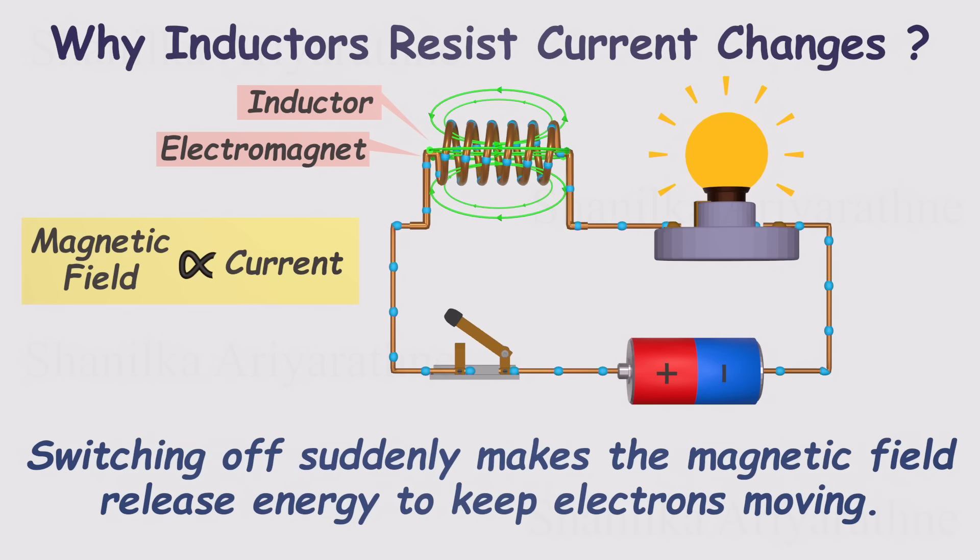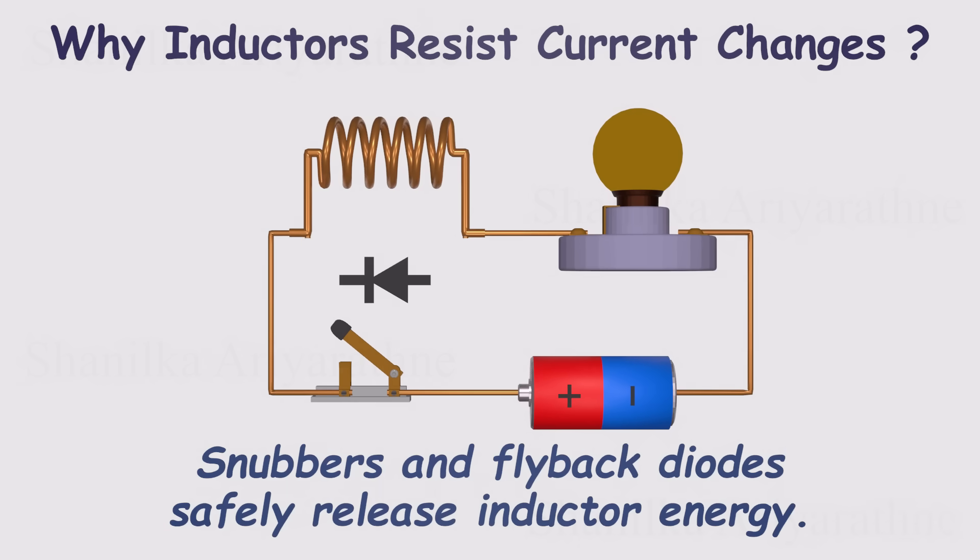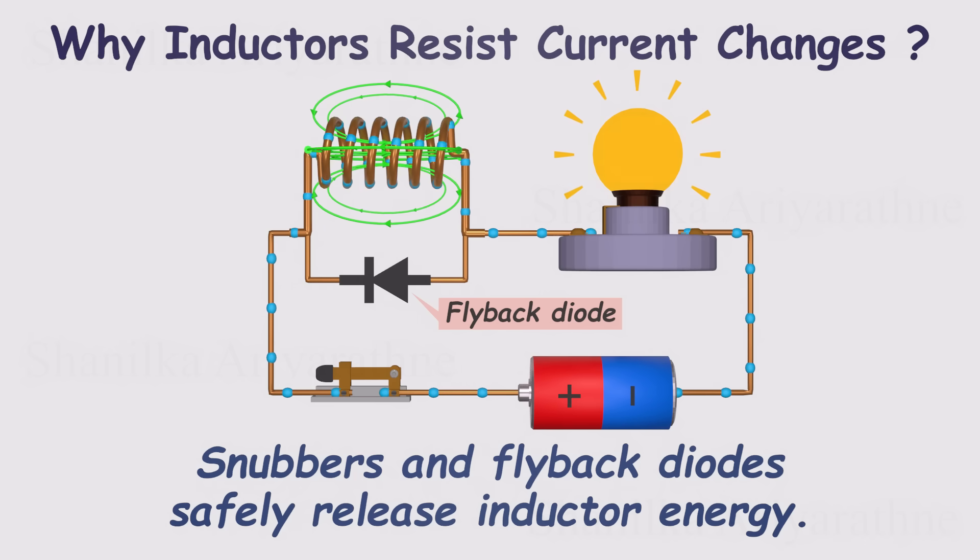But what happens if we suddenly turn off the switch and try to stop the current? The magnetic field doesn't just vanish instantly. Instead, it pushes back, releasing its stored energy to keep the electrons moving in the same direction. If the inductor has a path to release that energy, the current will keep flowing smoothly for a little while. But if the circuit is cut off abruptly, the energy has nowhere to go. The inductor reacts by generating a very high voltage across the open gap, sometimes strong enough to make a spark jump across the switch. That's why, in real circuits, we often add protective components like snubber circuits or flyback diodes. They give the inductor a safe way to release its stored energy, preventing damaging voltage spikes or little shocks to your fingers.